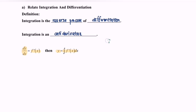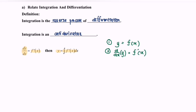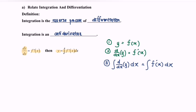Step number one: given y is equal to f(x). Step number two: if we differentiate with respect to x, we will have d/dx of y equals f prime x on the right hand side. Step number three: we integrate both sides — integrating d/dx of y with respect to x equals the integral of f prime x with respect to x. Step number four: simplifying, we obtain y is equal to the integral of f prime x dx.